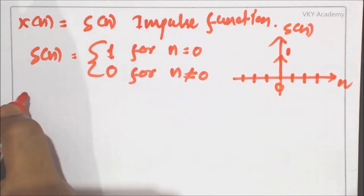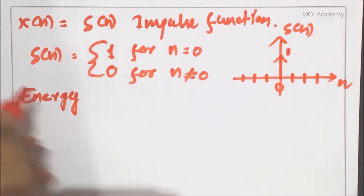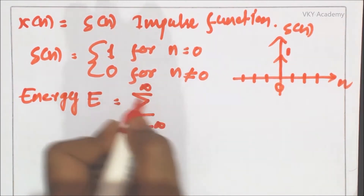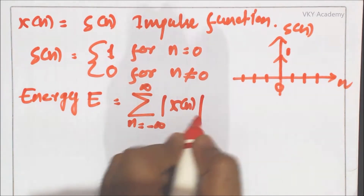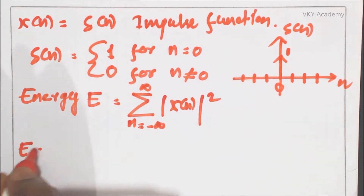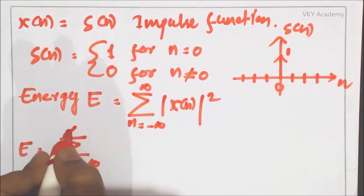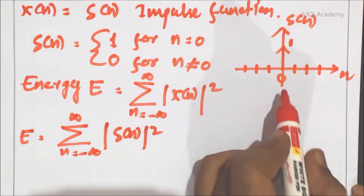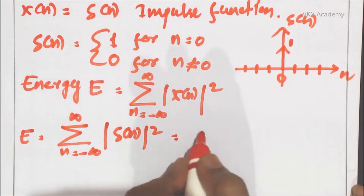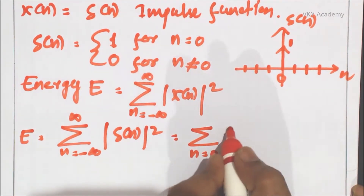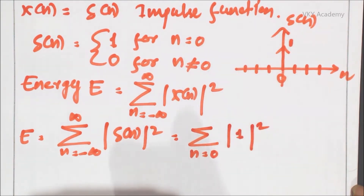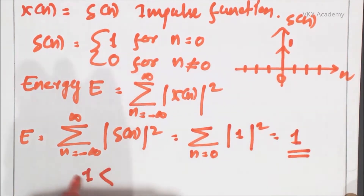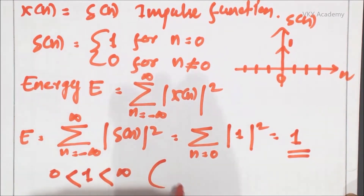Let us calculate the energy value. Energy E = summation from n = −∞ to ∞ of |δ(n)|². Since δ(n) exists only at n = 0 where the value is 1, the summation reduces to 1. Since 1 is a finite number lying between 0 and infinity, the signal is an energy signal.